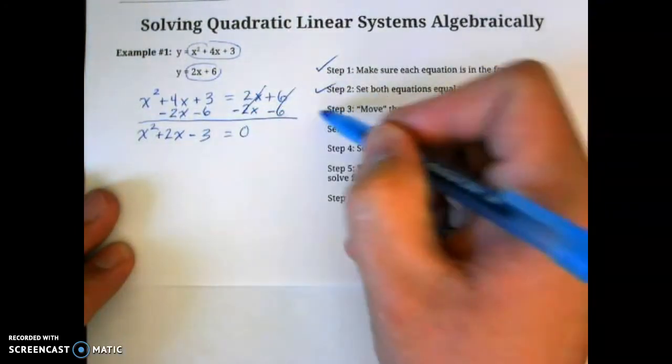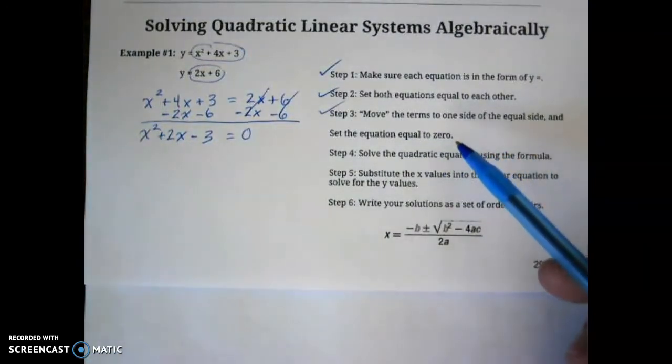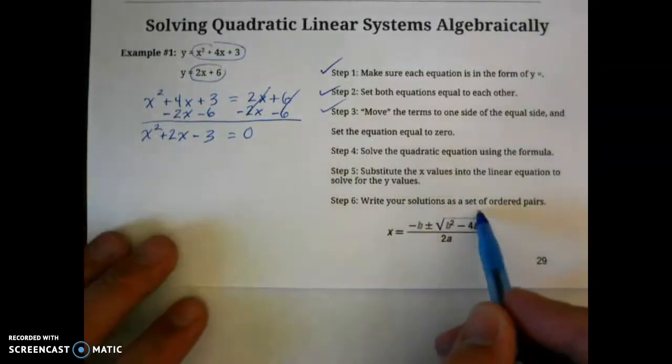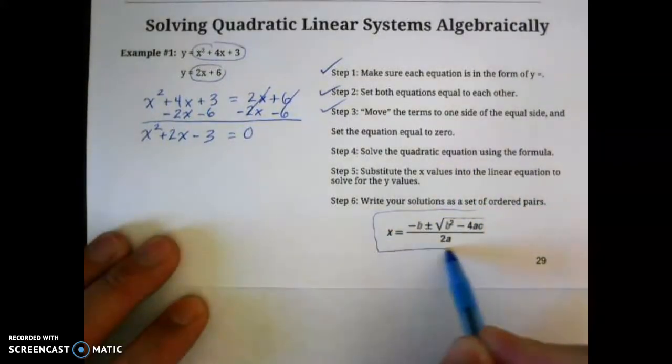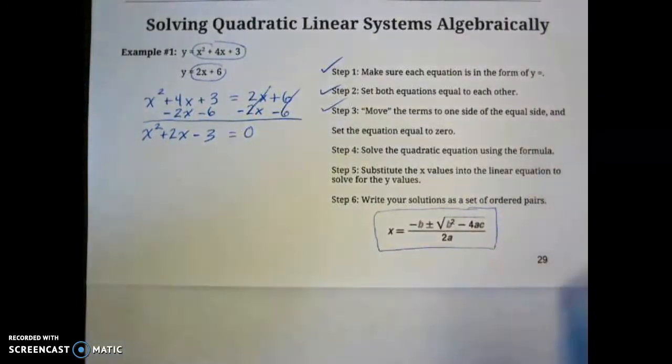So at this point, we've done step 3. We moved the terms to one side of the equal sign and set the equation to 0. For step 4, we're going to solve the quadratic equation using the formula. Here's, again, your formula for quadratic formula.